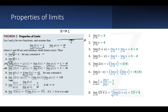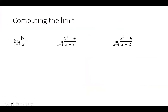Similarly, we can distribute the limit to each function in a multiplication, so it becomes the product of two limits, which is l times m. The same goes for division as well. And when we take the nth root of a function, we can also move the limit operator inside, evaluate the limit of f(x) to get l first, and then apply the nth root to l. These are just some general properties.